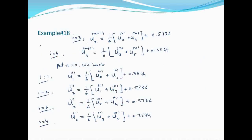इसी तरह i=3 और i=4 के लिए values calculate कर लेते हैं। Time level 1 पर जो values हैं वो as-is रहेंगी क्योंकि अभी उनकी value का पता नहीं है।